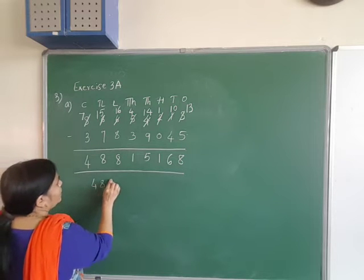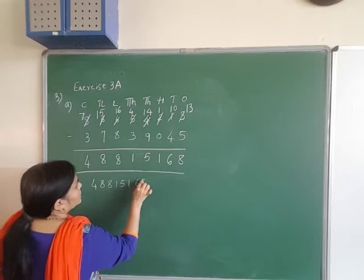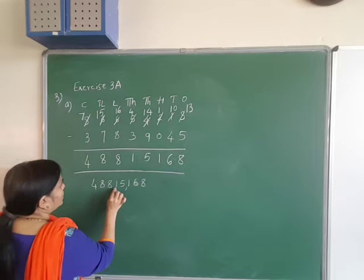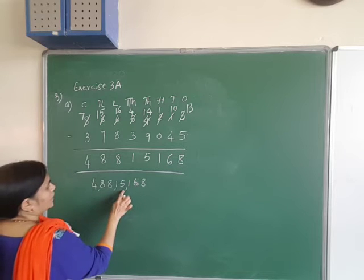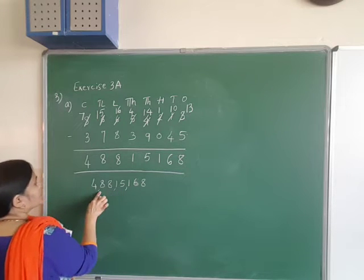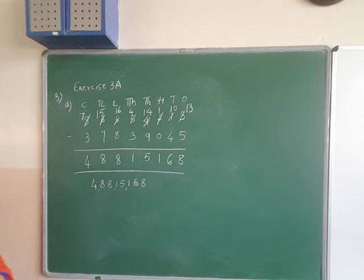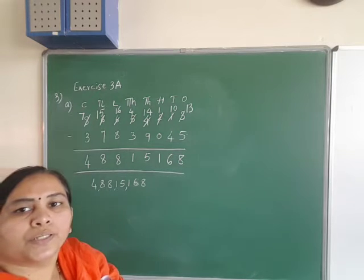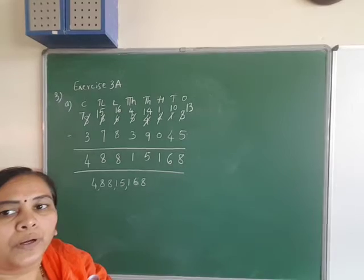How will you write this with the comma? After 3 places, insert a comma, then 2 places each for lakhs, ten-lakhs, crores. I hope you understood — write this in your notebook.